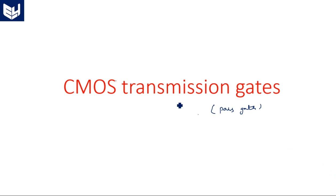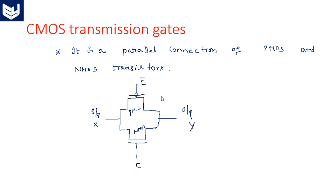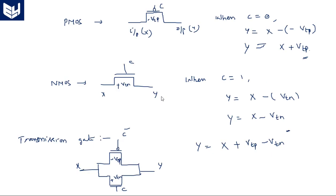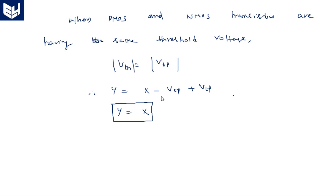In this video, I am going to explain the DC analysis of CMOS transmission gate. In the previous video, I started the discussion of CMOS transmission gate, which is also sometimes referred to as pass gates. A CMOS transmission gate consists of a PMOS and NMOS connected in parallel between input and output. We go for the transmission gate instead of a simple pass transistor because of threshold voltage decrement or increment, so to balance that we use the transmission gate.